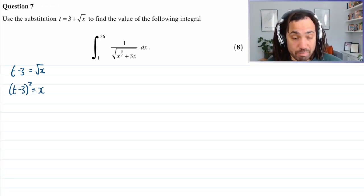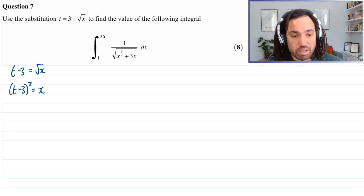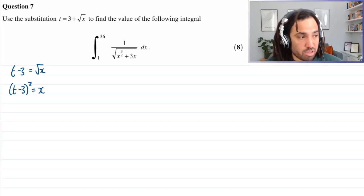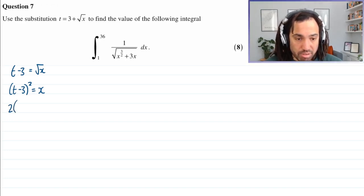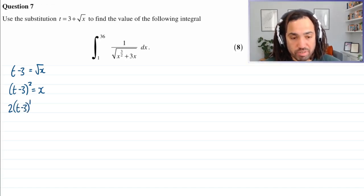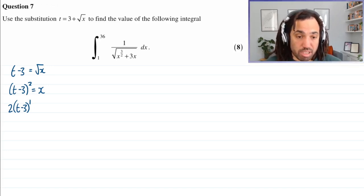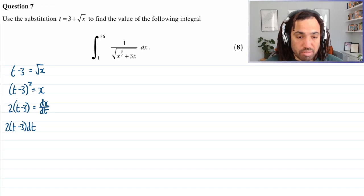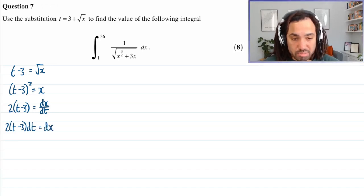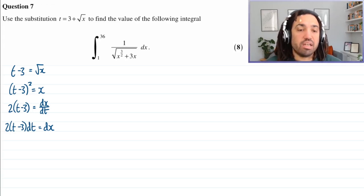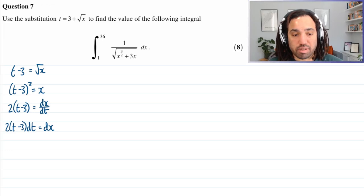And then I differentiate with respect to t. So to differentiate this using the chain rule, the 2 comes down to the front. The power comes down. The bracket stays the same. We drop the power down by 1 and then we times by the derivative of the bracket, which happens to be 1. So we don't need to do that. And then that gives me dx by dt, so differentiating with respect to t. And then I could just multiply both sides by dt and we get an expression for dx, which I think is just slightly cleaner than using the differentiating the root x part.